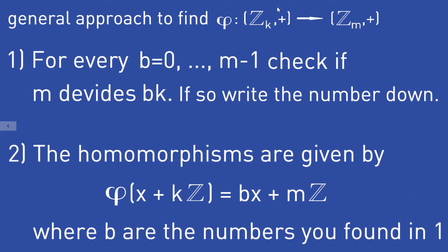To summarize: to find every group homomorphism from Z_K to Z_M, first check for every B from 0 to M minus 1 whether M divides B times K, and write down each B that satisfies this. Second, write down the homomorphisms phi of (x + KZ) = Bx + MZ using the B values found in step one. I hope this video helps you find group homomorphisms from Z_K to Z_M more quickly. If you like this video, please consider subscribing to my channel. Thank you for your attention.